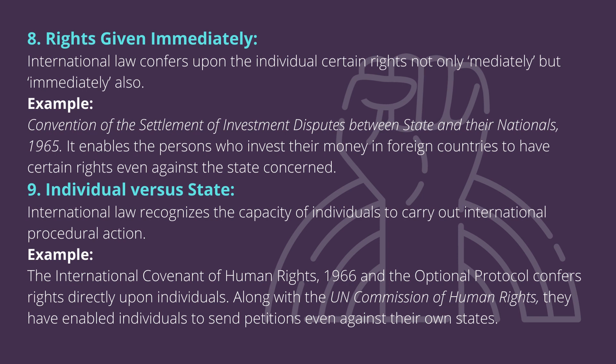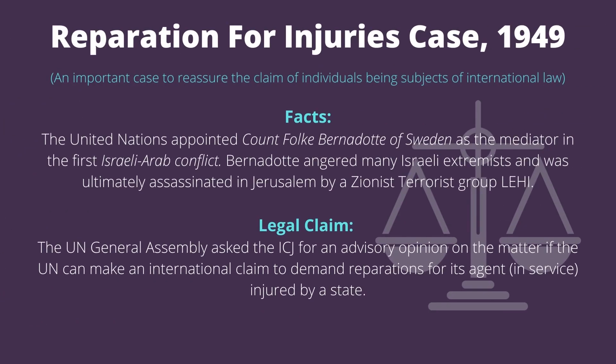Along with the UN Commission of Human Rights, these instruments have enabled individuals to send petitions even against their own states. An important case reasserting individuals as subjects of international law is the Reparation for Injuries case, 1949. The United Nations appointed Count Folke Bernadotte of Sweden as the mediator in the first Israeli-Arab conflict. Bernadotte angered many Israeli extremists and was ultimately assassinated in Jerusalem by the Zionist terrorist group Lehi.